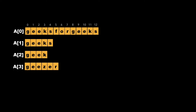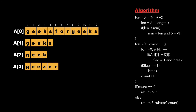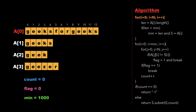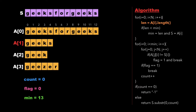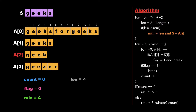Now let's look at the approach. The array has four strings: geeksforgeeks, geeks, geek, and geezer. We declare variables: count, flag, and min, initialized to zero, zero, and one thousand. We traverse the array, store each string's length in a variable called 'length', and if length is less than min, update min as length and store that string in a new string variable 's'. We continue until we find our minimum string.